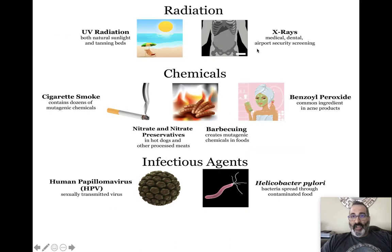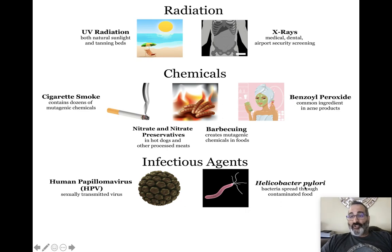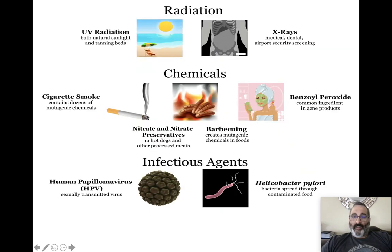Things linked to cancer include radiation — such as excessive X-rays and ultraviolet radiation — chemicals like those in smoke, nitrates in hot dogs and lunch meat, and chemicals produced when burning meat like charred edges. Certain acne treatments like benzoyl peroxide are also linked to cancer. Biological infectious agents include the HPV virus, which can lead to cervical cancer, and the bacterium H. pylori, which can lead to stomach cancer or ulcers. These are all mutation causers and cancer causers.